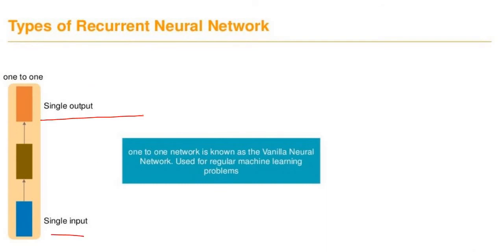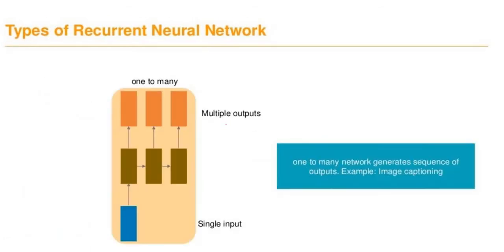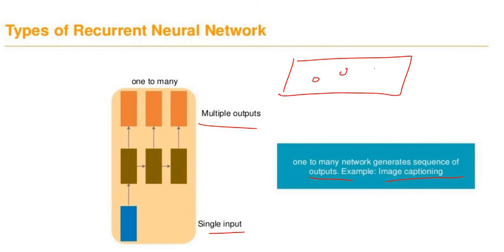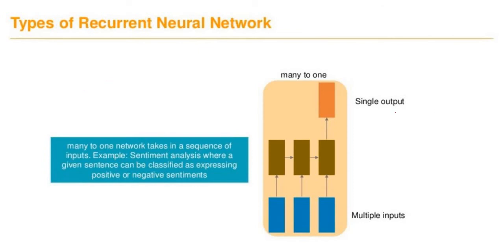There are different types of RNNs. First, one-to-one: single input, single output — this is used for regular machine learning problems and is called a vanilla neural network. Second, one-to-many: single input with multiple outputs. This network generates a sequence of outputs — for example, image captioning, where only one image is given but we caption multiple objects within it.